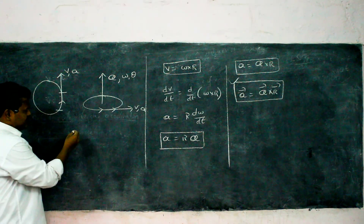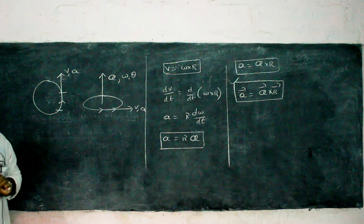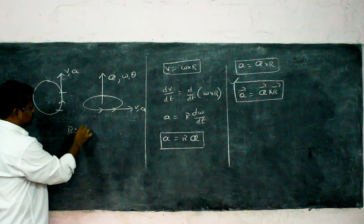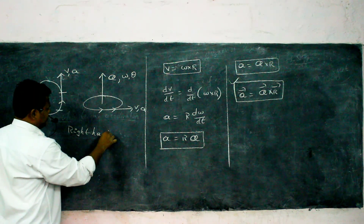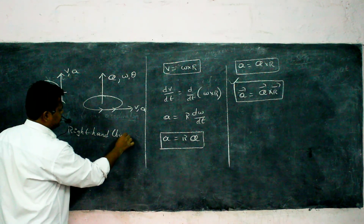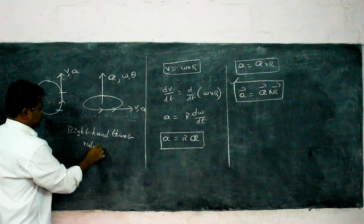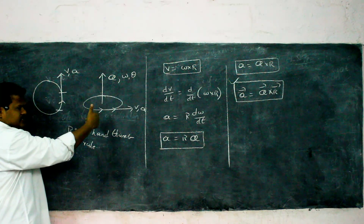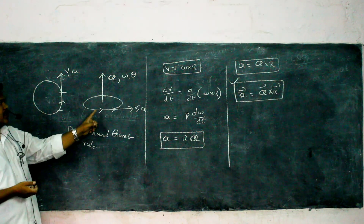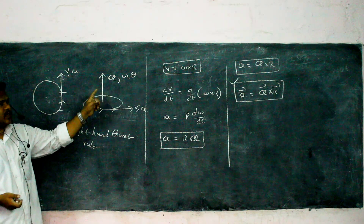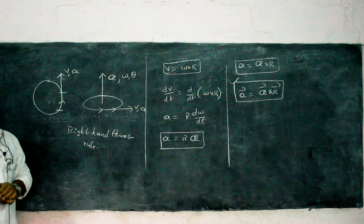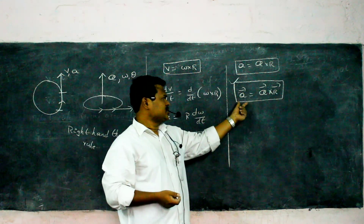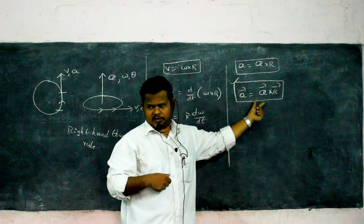The rule for finding directions of angular quantities is the right-hand thumb rule. Rotate the fingers of your right hand in the direction of motion of the body; the thumb will give the direction of the angular vectors alpha, omega, and theta.